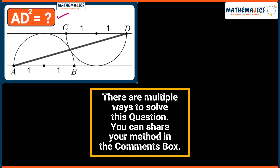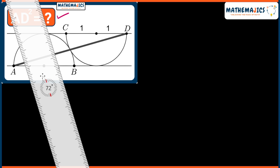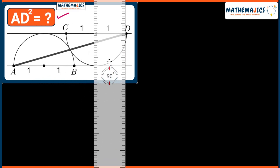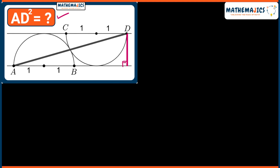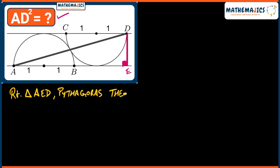To find AD squared, I'll be doing some construction work. I will be drawing a line perpendicular from point D — let's draw this line perpendicular and name it DE. Now we can look at right triangle AED, and what we can do is apply Pythagoras theorem here.